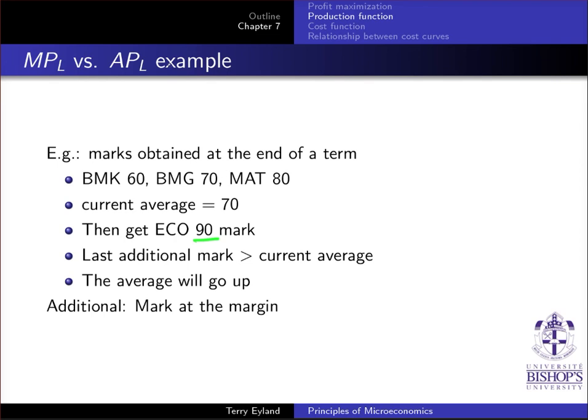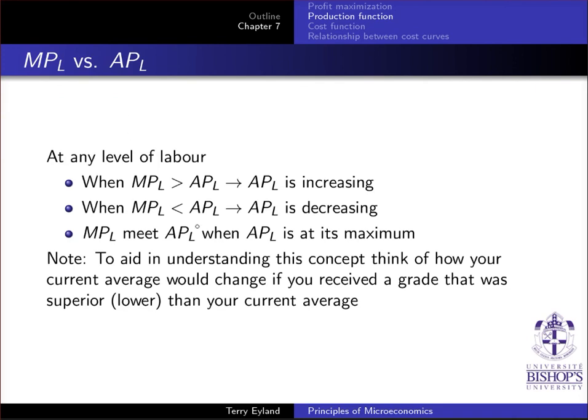Same idea here that applies. So this relationship between average productivity and marginal productivity will always hold. There's no reason rationally that this could not hold.